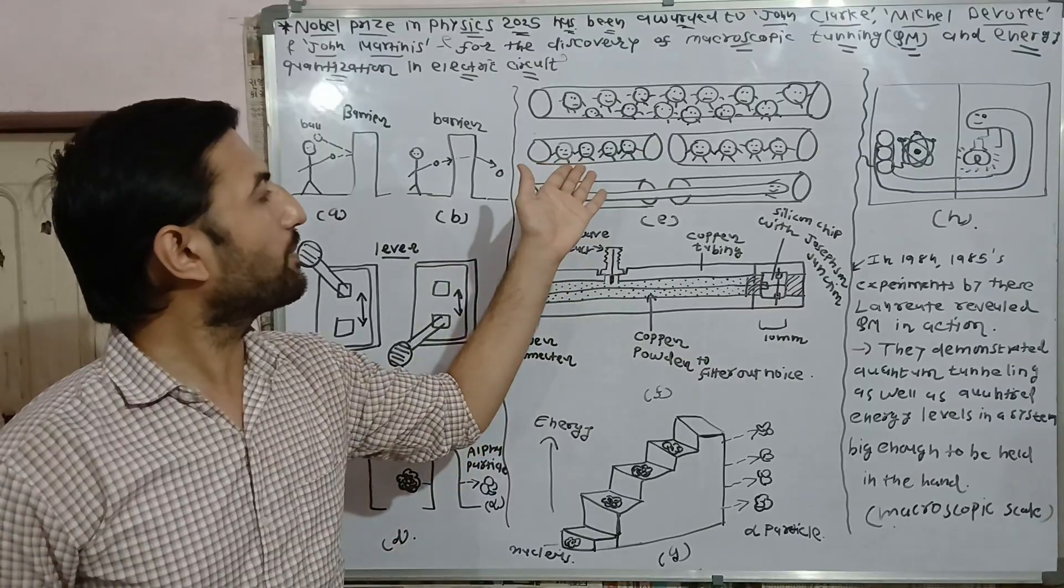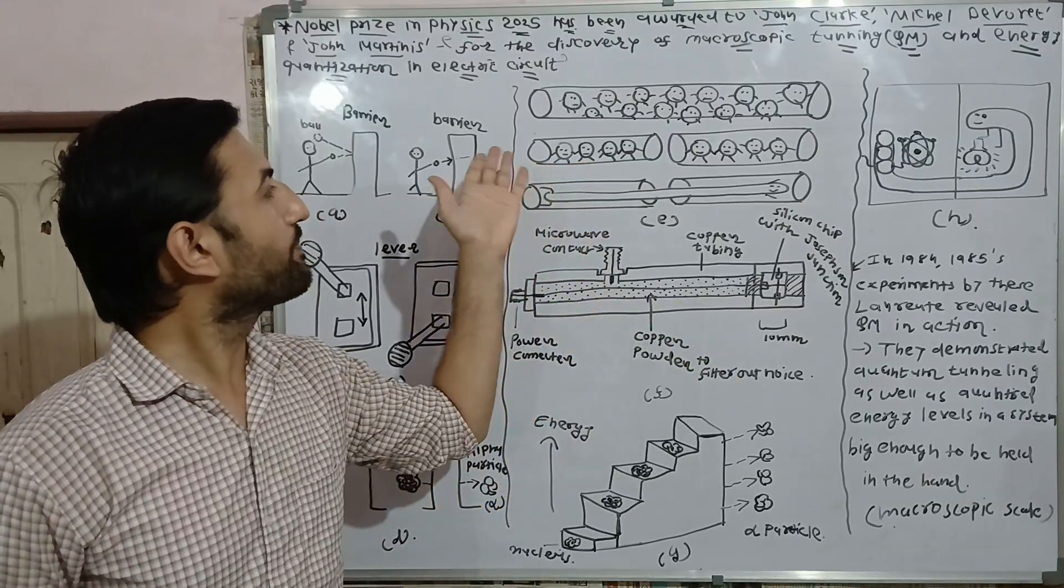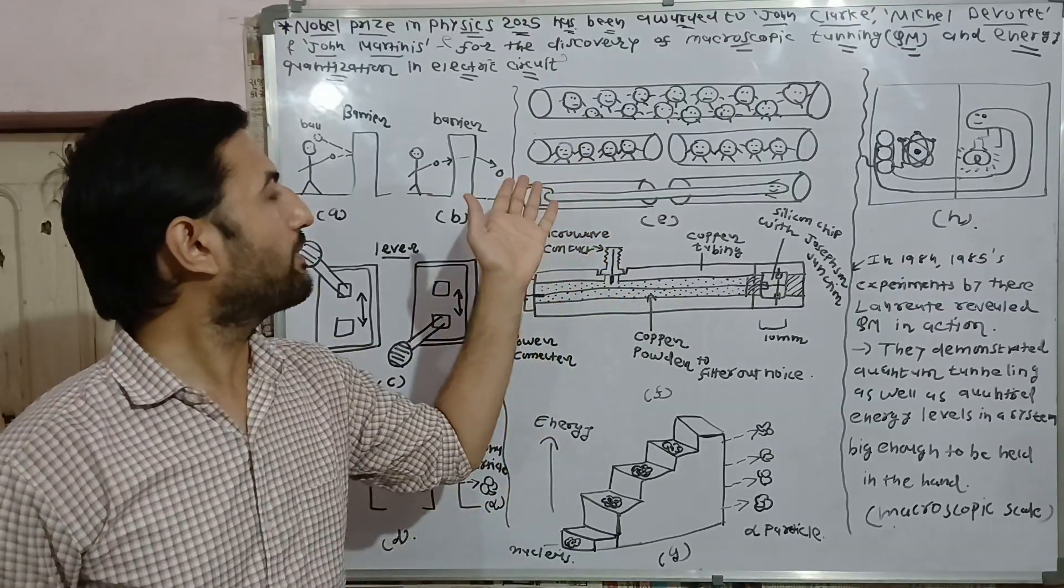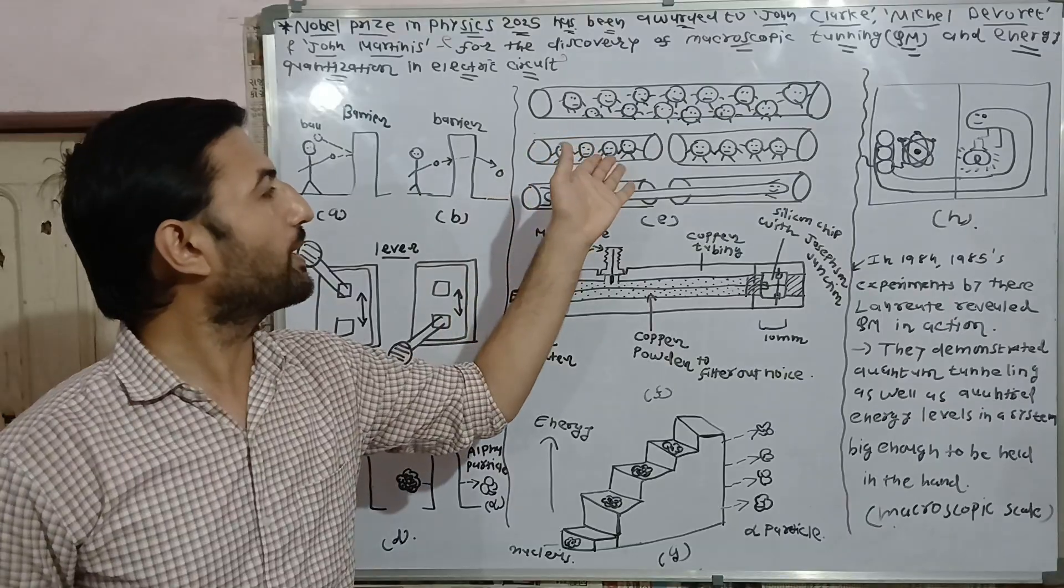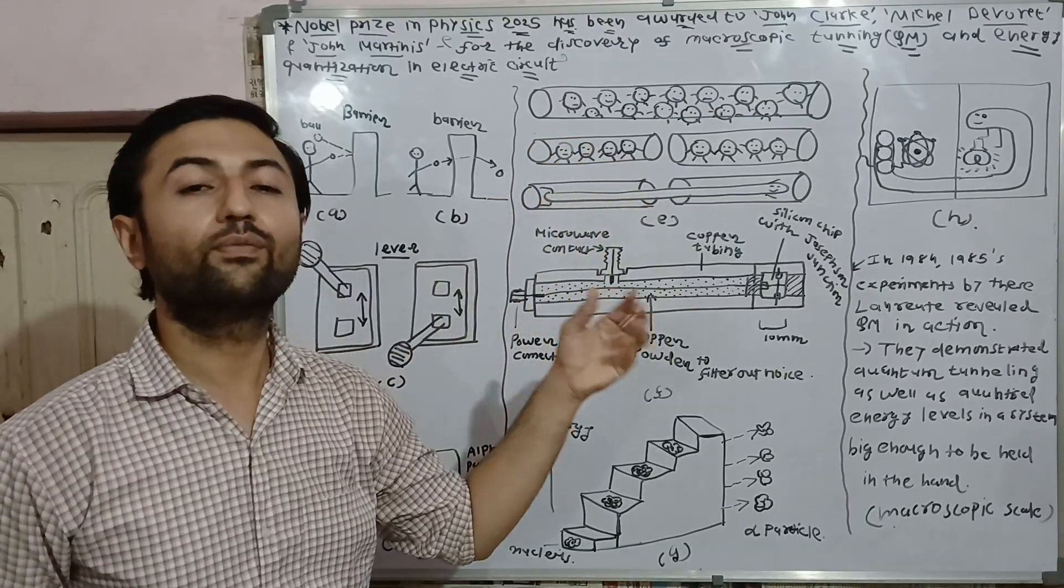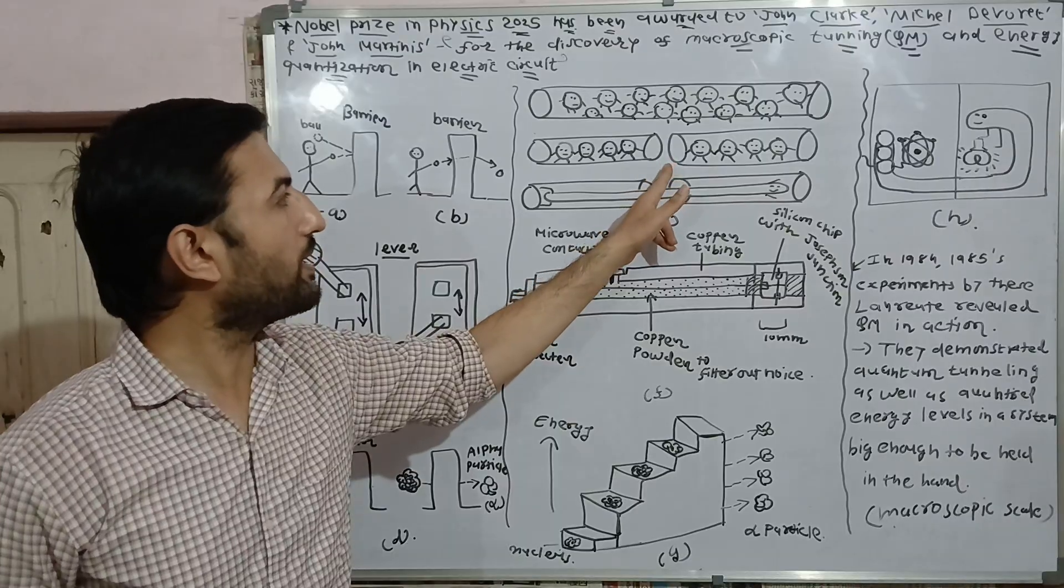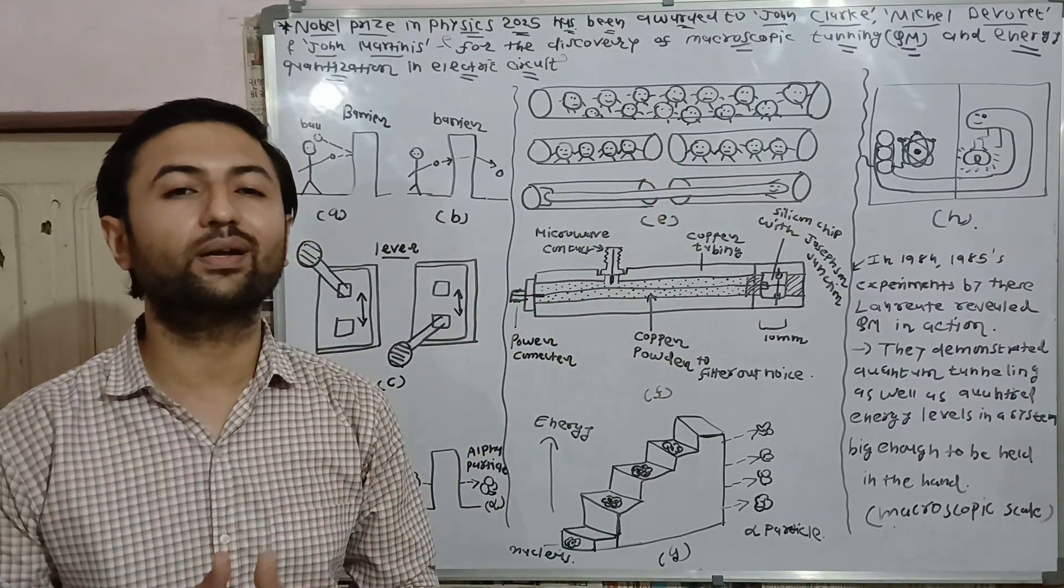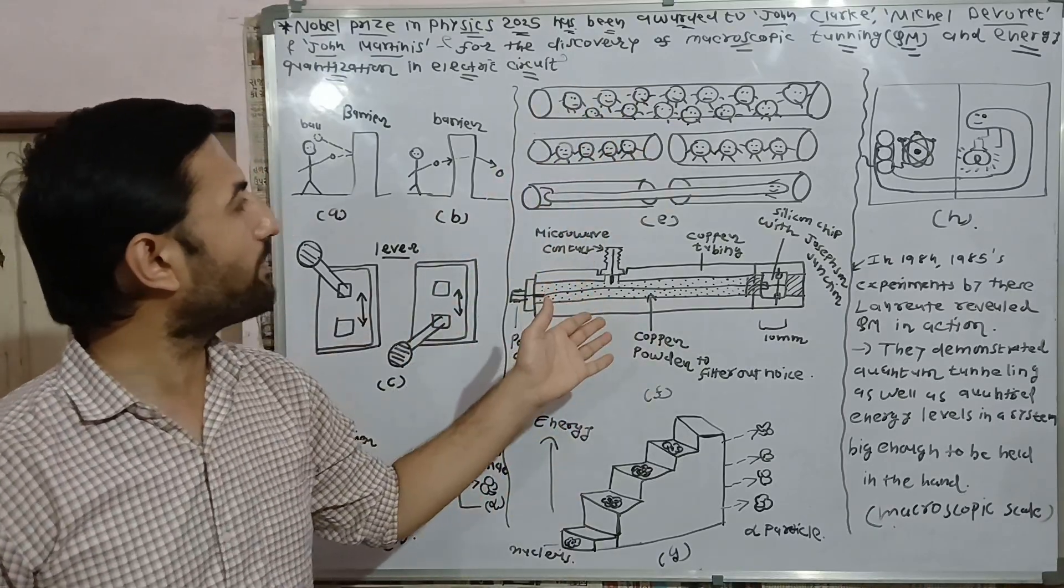But in superconducting material at lower temperature, these electrons make pairs and through this flow of pairs in the superconducting material current flows. Here this gap shows kind of barrier which is known as Josephson junction in superconducting material.